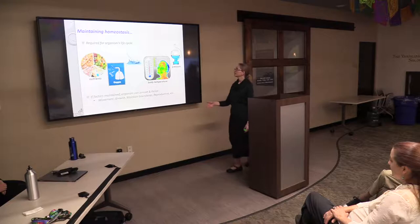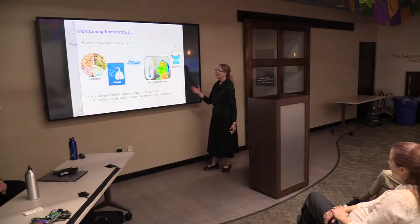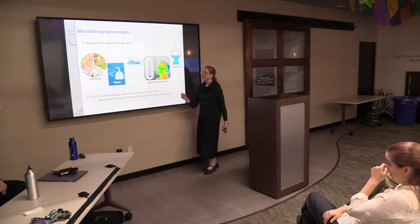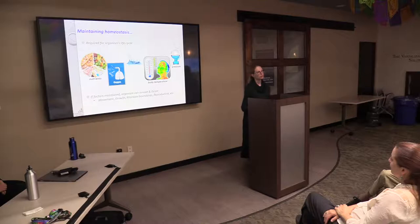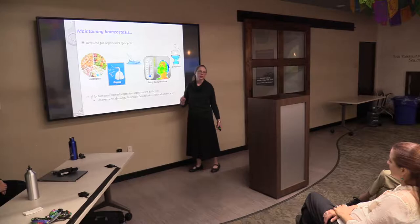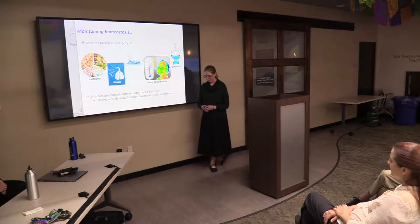To maintain homeostasis we need several things, some we take for granted: constant atmospheric pressure, access to water and oxygen, maintaining body temperature, and nutrients. If we have all of these as an organism, we can maintain that balance on the whole — and as a population do things such as reproduce, develop, and maintain growth.